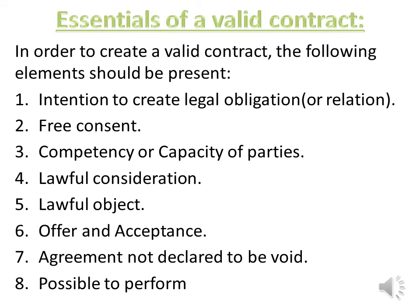In order to create a valid contract, the following elements should be present: intention to create legal obligation or relation, free consent, competency or capacity of parties, lawful consideration, lawful object, offer and acceptance, agreement not declared to be void, and possible to perform.